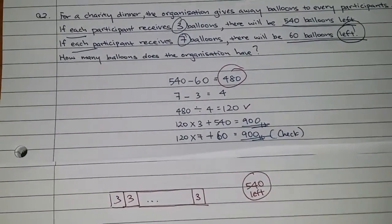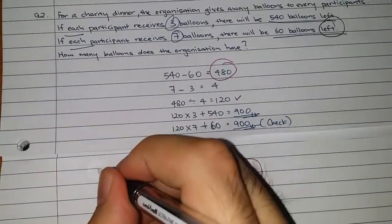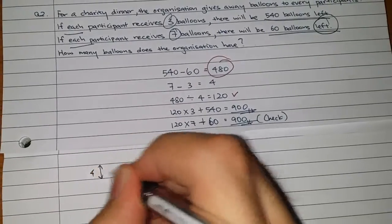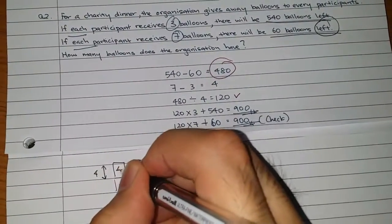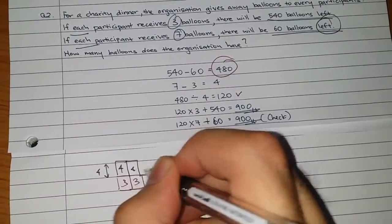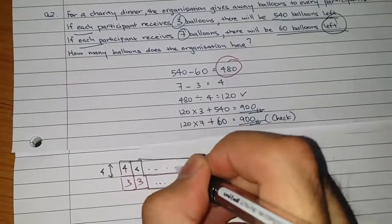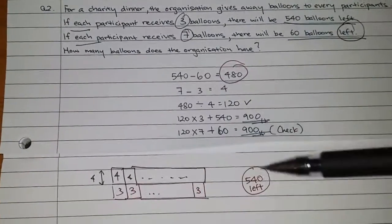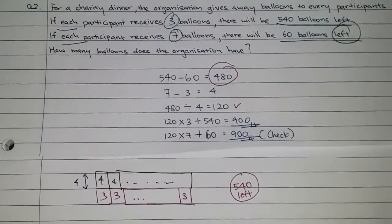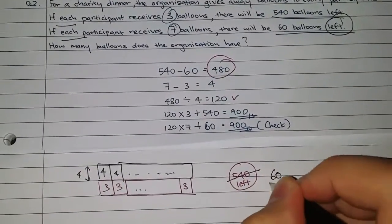So in this case, I'm gonna continue giving out more. How many more to each participant? 4. So 4 here, all the way. And because after giving out all the 4 balloons more, I have 60 left. So in the end, I'm left with 60.